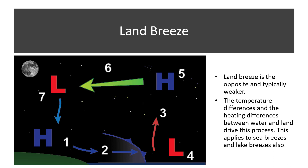Land breeze is the opposite and typically weaker. Air near the surface cools over land faster, creating a localized area of high pressure, number 1. Cool air moves out to sea toward lower pressure, number 2. Relatively warm air over the water is forced to rise, number 3. This air eventually cools with height and sinks over land, number 6 and 7.